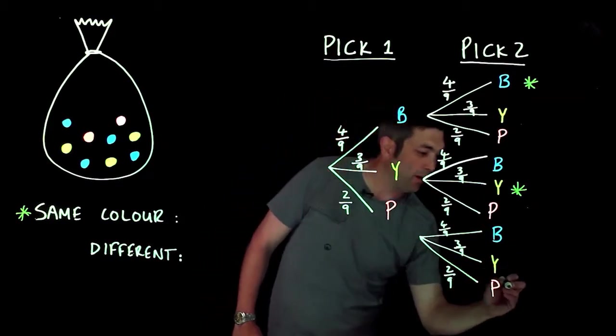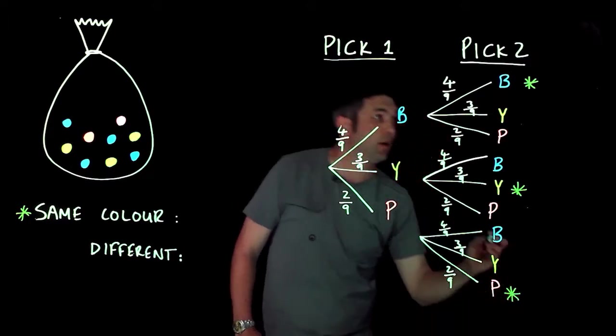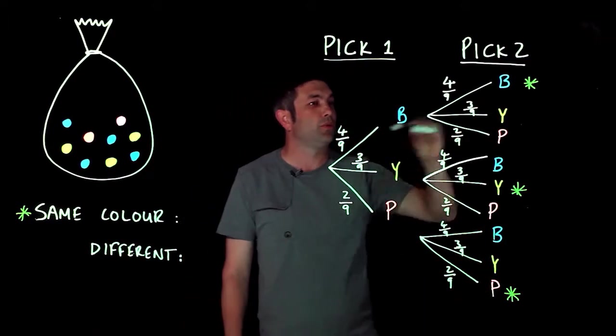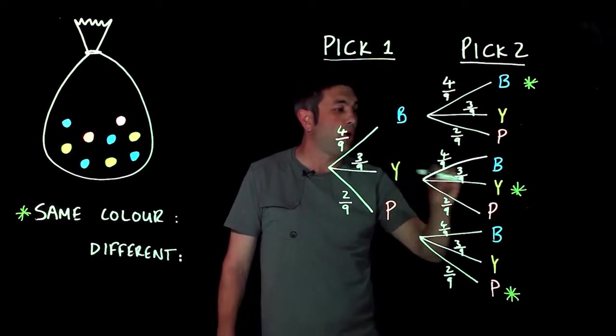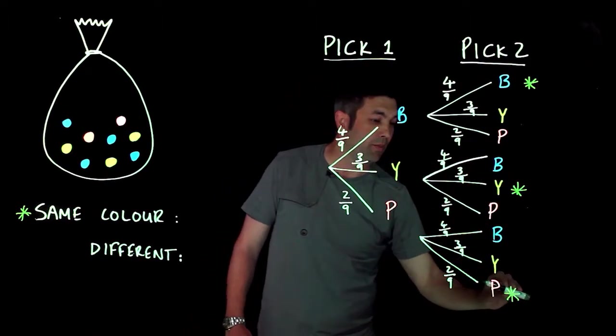Yellow-pink doesn't count, pink and blue, pink and yellow, pink and pink. I could have pink and pink. So I've got three different options: blue and blue, or yellow and yellow, or pink and pink.